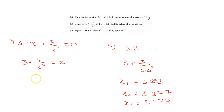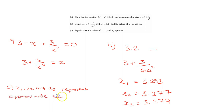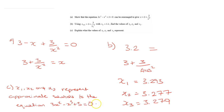Part C asks: explain what the values x₁, x₂ and x₃ represent. These represent approximate solutions to the equation 3x² - x³ + 3 = 0. If the equation isn't given directly, you may need to rearrange the iterative formula back. The iteration, if continued, will converge to tell you what value of x makes the equation equal to zero.